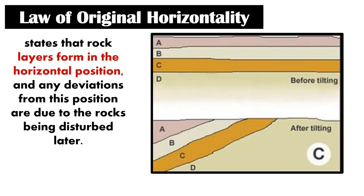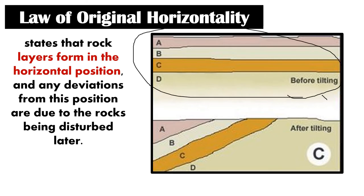The next law is the law of original horizontality. This law states that rock layers form in an original horizontal position, and any deviations from this position are due to the rocks being disturbed later. Originally, the formation of rock layers will always be horizontal, but horizontality may be disturbed due to movement of the earth. With this principle, we can see the relationship between the formation of rock layers and the geological events they experienced. For example, in this picture, originally rock layers D, C, B, A looked horizontal, but tilting occurred — possibly due to an earthquake — so the rock layers became tilted. We can say the geological event happened after the formation of rock layer A.